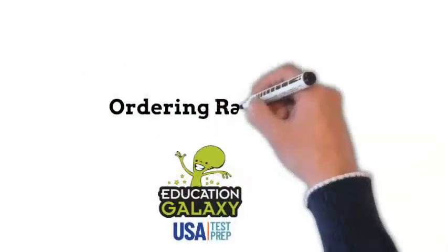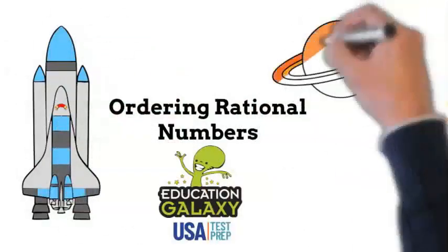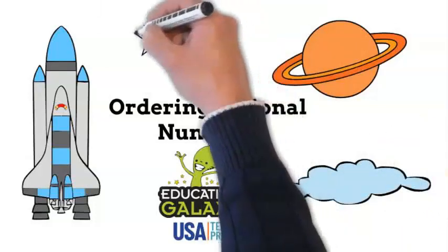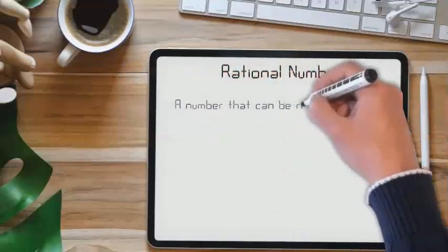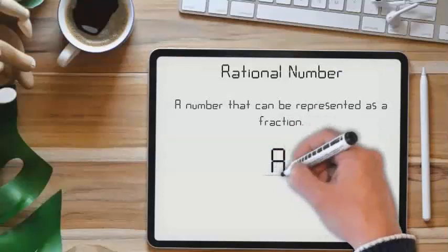Education Galaxy presents Ordering Rational Numbers. A rational number is a number that can be represented as a fraction, some number A over a number B.